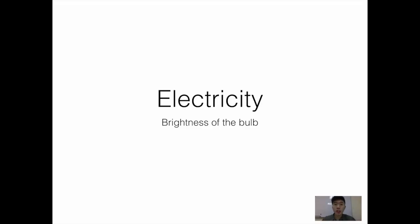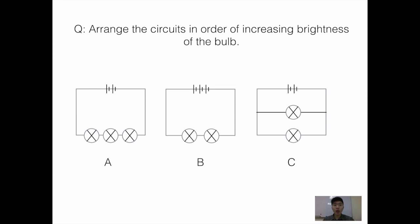I decided to do this question on electricity — the brightness of the bulb — because many of my students don't know how to determine how bright the bulb is. Let's take a look at this question: arrange the circuits in order of increasing brightness of the bulb. We have three circuits A, B, and C. The method to tackle this kind of question is to find out what is the ratio of the bulb to the battery.